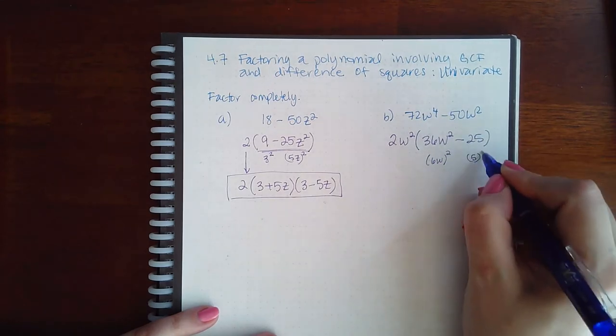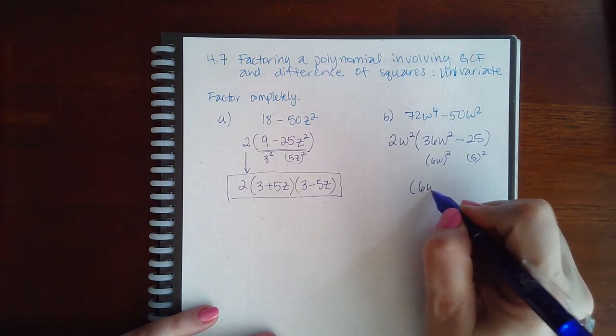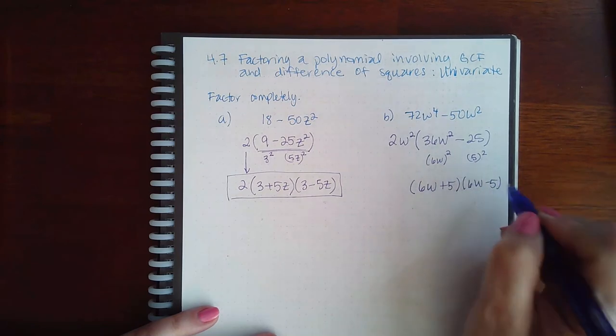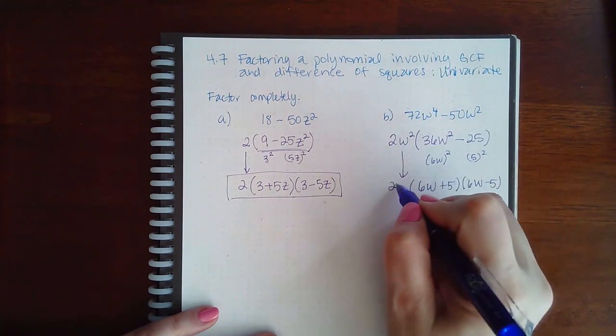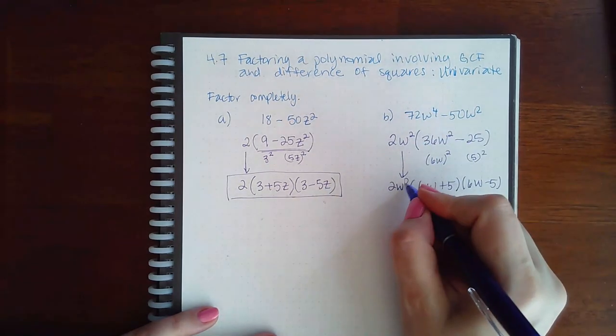So when I use my formula, I get (6w + 5)(6w - 5). And then I cannot forget about the GCF from the beginning to get my complete and final answer.